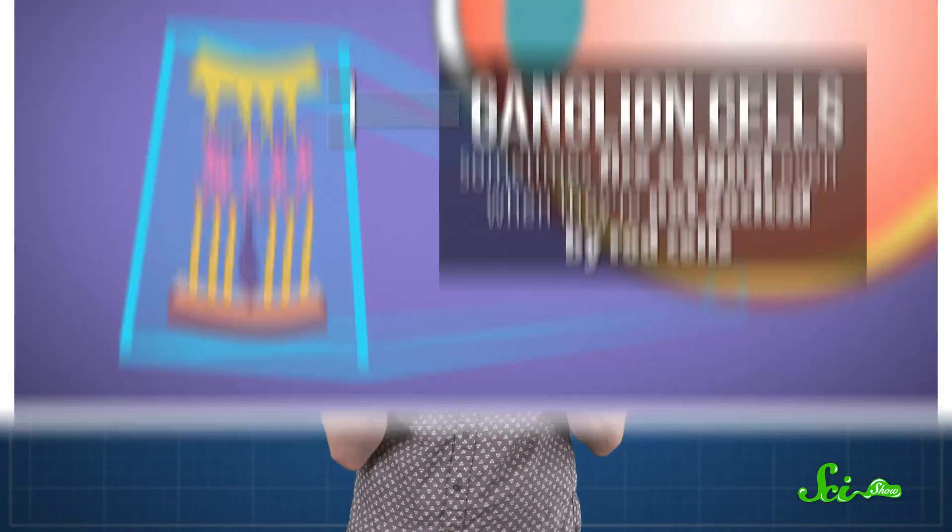But you can't blame your rods for all entoptic phenomena. Sometimes the ganglion cells fire a signal even when they're not excited by the rod cells. It turns out that pressure can also excite ganglion cells. So if you carefully rub your eyes and apply a little bit of pressure, you'll cause ganglion cells to fire signals as if there is light entering your eyes.